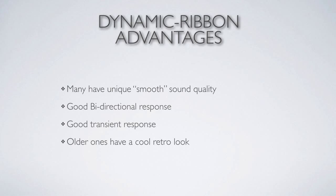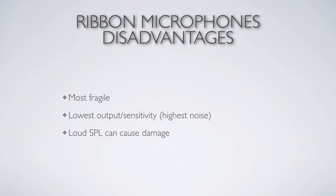For the ribbon to move, there must be a sound pressure difference between the front and back. Any sound arriving at the side will have the same pressure on both front and back, so the ribbon won't move — it's not sensitive to sounds from the side. That makes it bi-directional, picking up sound only from front and back. And of course, when we think of old microphones, we often picture those big RCA ribbons used by Frank Sinatra and Elvis — ribbons have a cool retro look.